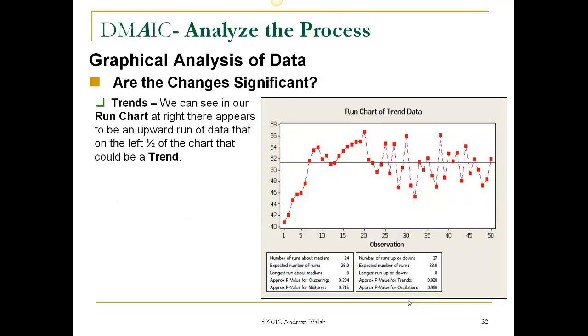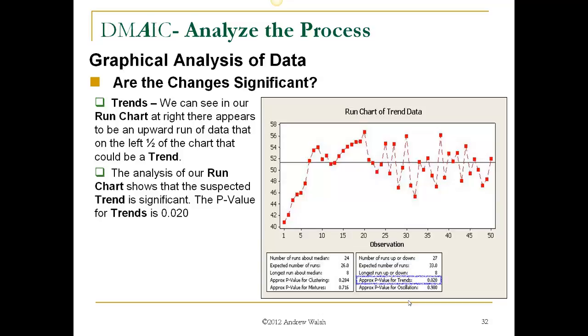Trends. We can see in our run chart at right, there appears to be an upward run of data that on the left half of the chart, that could be a trend, most likely. And the analysis of a run chart says the suspected trend is significant. The p-value for the trend is .02. So it's less than .05.